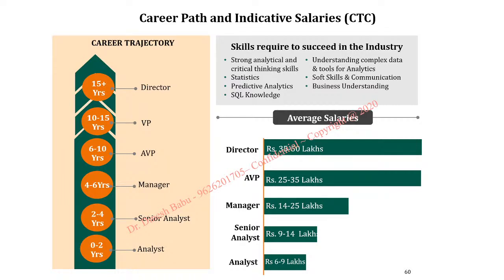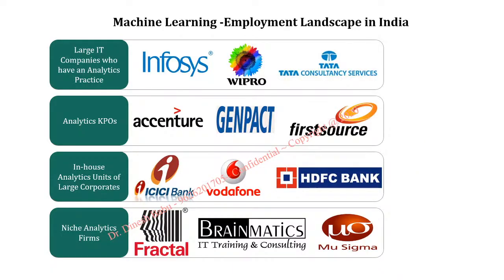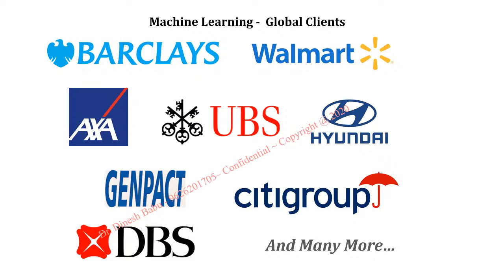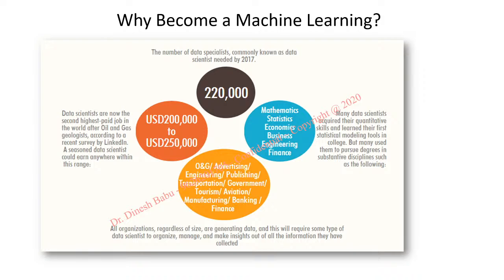Even at entry level, pay is very high compared to other professions — compared to finance, marketing, insurance, or IT. The analytics industry is very high paying. Top companies have already implemented machine learning in their business processes — IT companies, KPOs, banks, analytics firms. Not only in India — globally, companies like Walmart, UBS, and Hyundai have implemented machine learning. Pay-wise and opportunity-wise, this profession offers a great advantage.